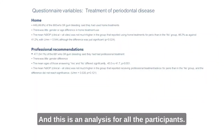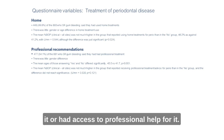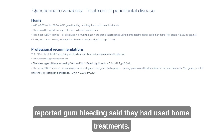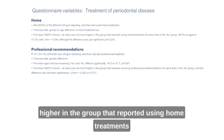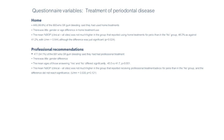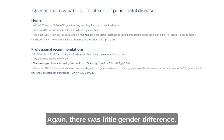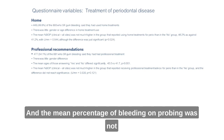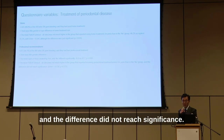This analysis covers all participants and shows the percentage of people who self-reported periodontal disease and used home treatments or had access to professional help. Nearly 50% (49.8%) of participants who self-reported gum bleeding said they had used home treatments; there was little gender or age difference in home treatment use. The mean percentage of bleeding on probing was not much higher in the group reporting home treatments than in those who answered no, though the difference was just significant. 54.1% of those who self-reported gum bleeding said they had received professional help; there was little gender difference, though mean age differed significantly. The mean percentage of bleeding on probing was not much higher in those who received professional help, and the difference did not reach significance.